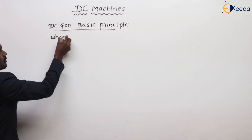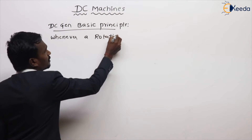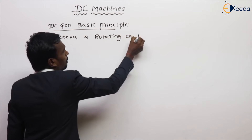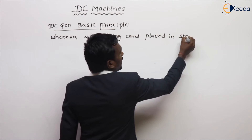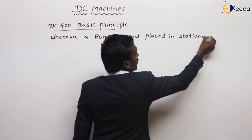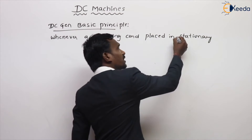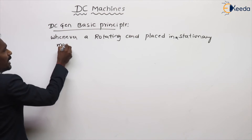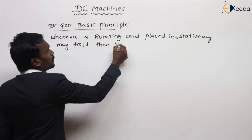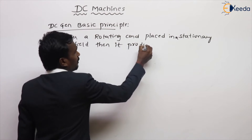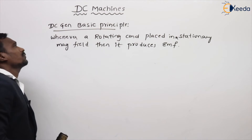Whenever a rotating conductor is placed in a stationary magnetic field, it produces an EMF. This is simply the basic principle of the DC Generator.